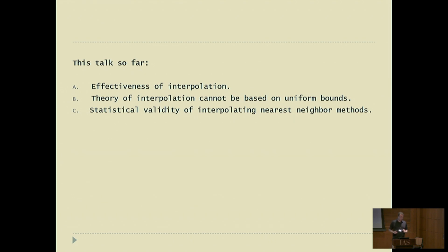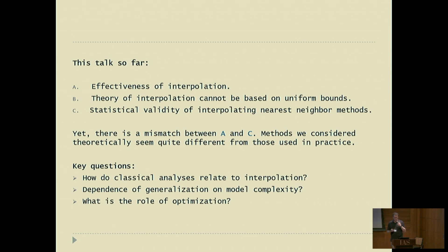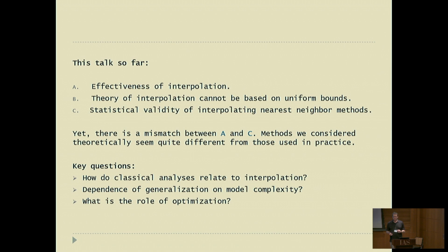But how does this relate to the methods we use in practice, like neural nets? There are several key questions: How do classical analyses relate to interpolation — is there a bias-variance tradeoff, a U-curve? What does it depend on in terms of model complexity — is model complexity irrelevant? What is the role of optimization? We have partial answers.